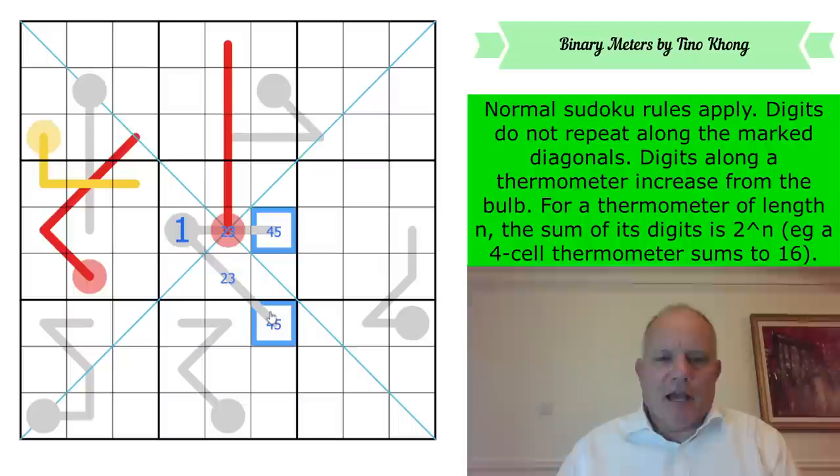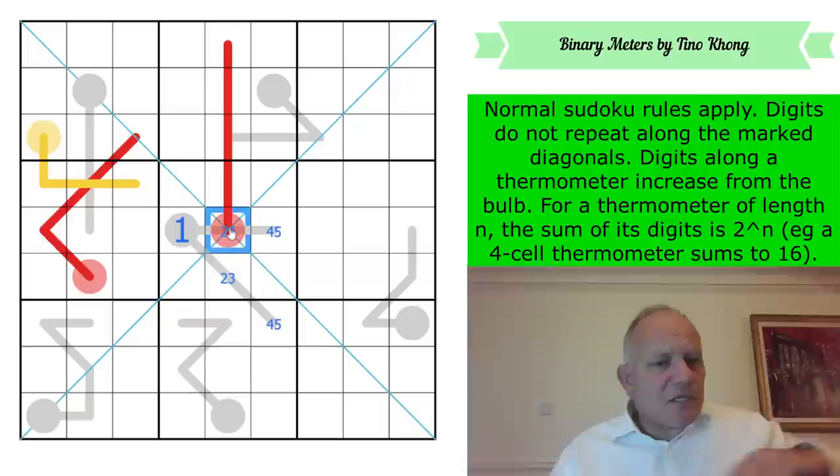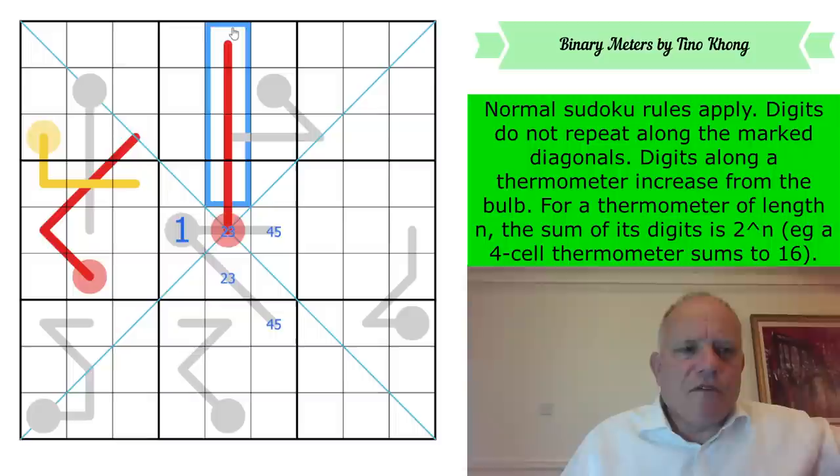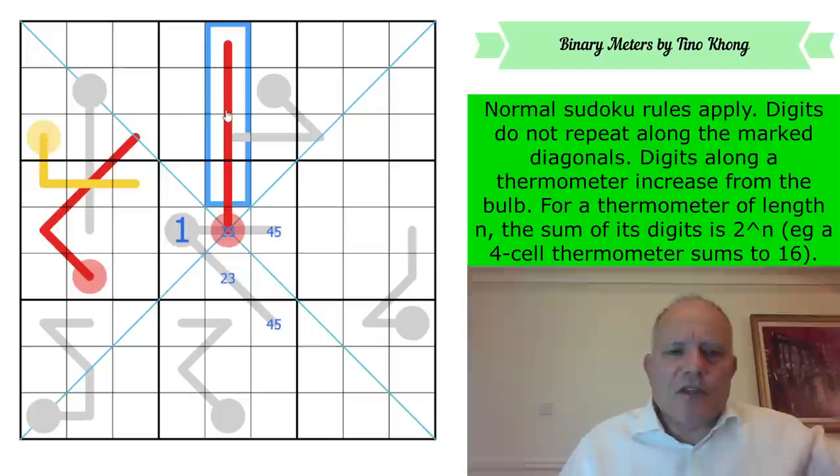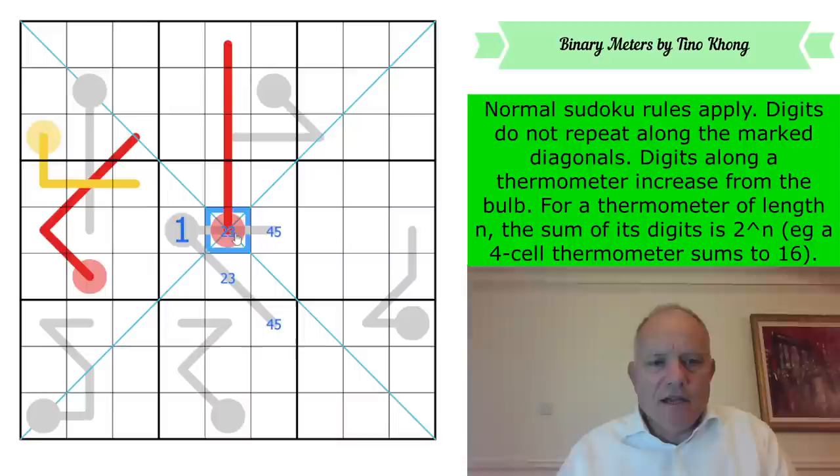Then the lower digit is going to be in the next cell. So that's a two, three pair. Then I suppose we get a four, five pair on the tip. That must be right, I think. If this is a two on the bulb of a five cell 32 thermometer, the other cells would have to be six, seven, eight, nine, because 32 minus two is 30. And the only way of making that up in four Sudoku digits is six, seven, eight, nine. So if it was a two, we'd be going six, seven, eight, nine. And if it was a three, they'd add up to 29. And again, there's only one way. It's five, seven, eight, nine.